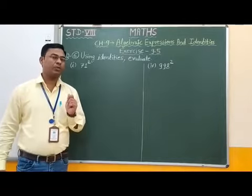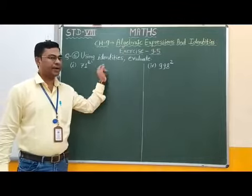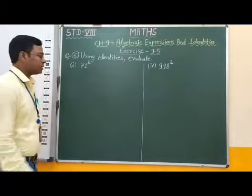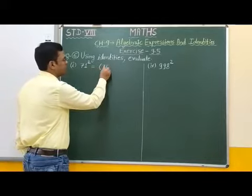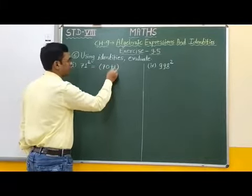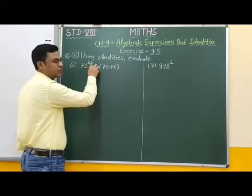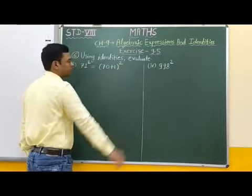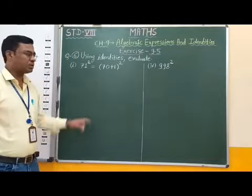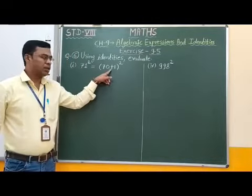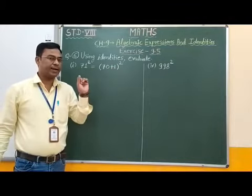Here we have to find out the square of 71 by using an identity. We can write 71 as 70 plus 1, since 70 plus 1 equals 71, and we need to square it. Here inside the bracket there is a plus sign and the whole bracket is squared, therefore we can use the first identity.